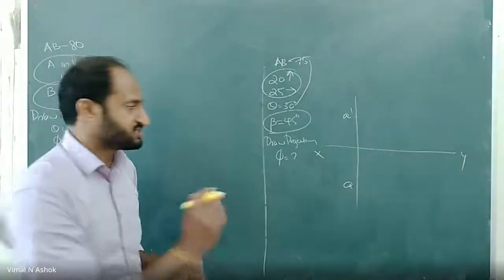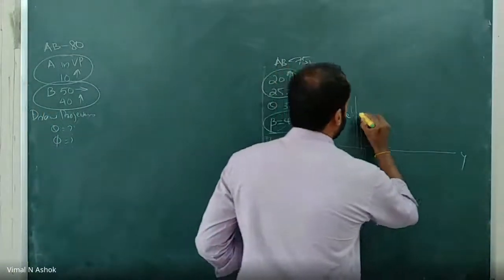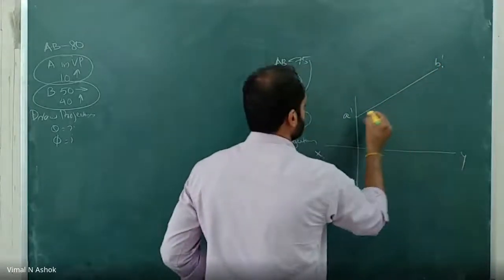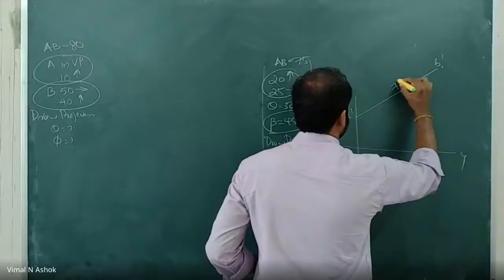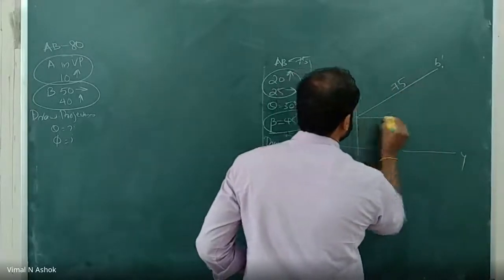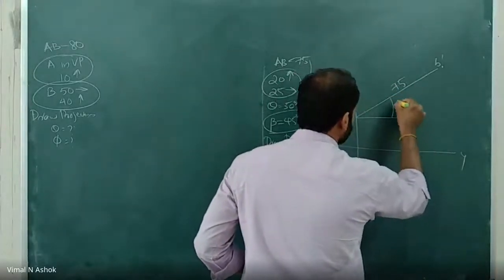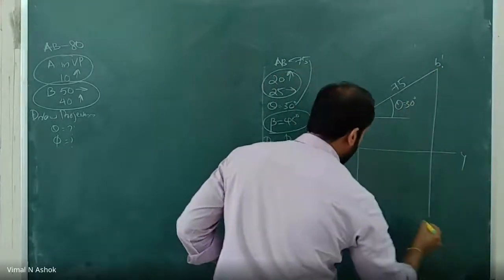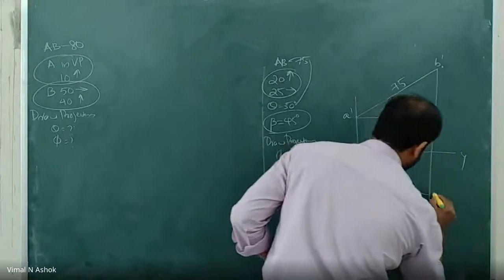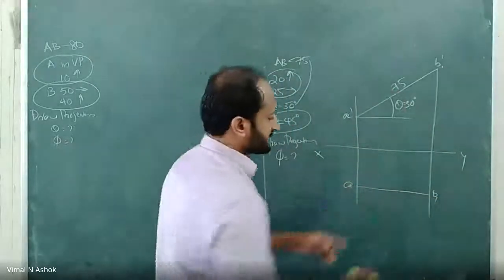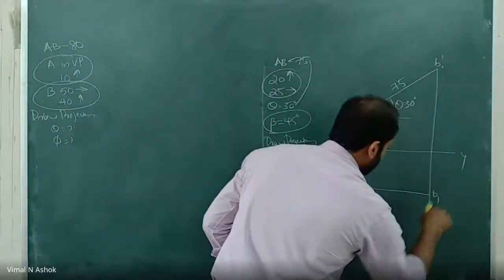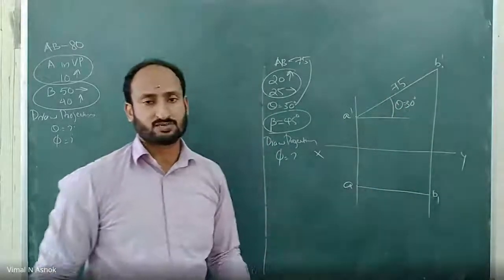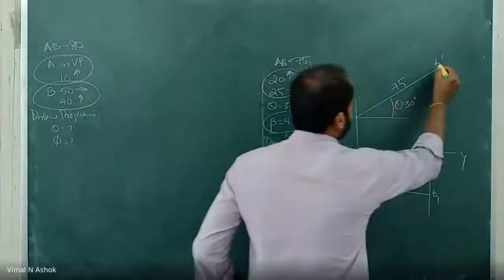So this will be the same. A dash B1 dash is 75mm. Theta is 30 degrees. A dash B1 dash — plan length parallel to XY. Elevation length equals true length, and that angle equals theta. Plan length is parallel to XY.